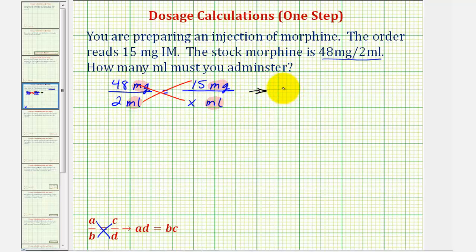48 times X would be 48X, and two times 15 is equal to 30. To solve for X, we'll divide both sides by 48.